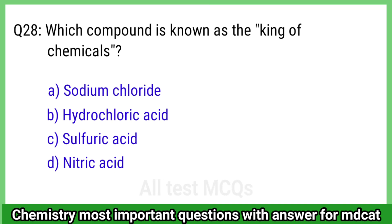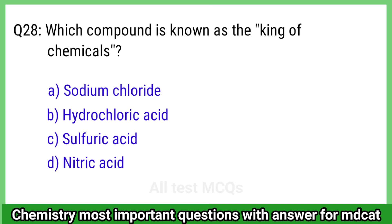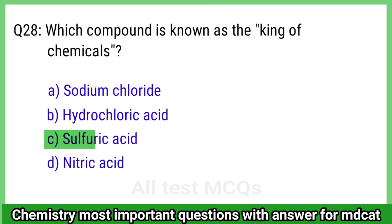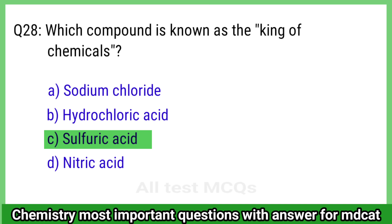Question 28: Which compound is known as the king of chemicals? The right answer is option C, sulphuric acid.